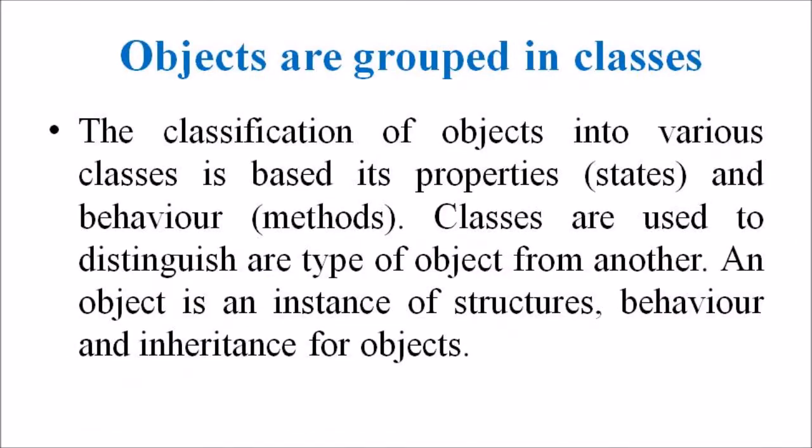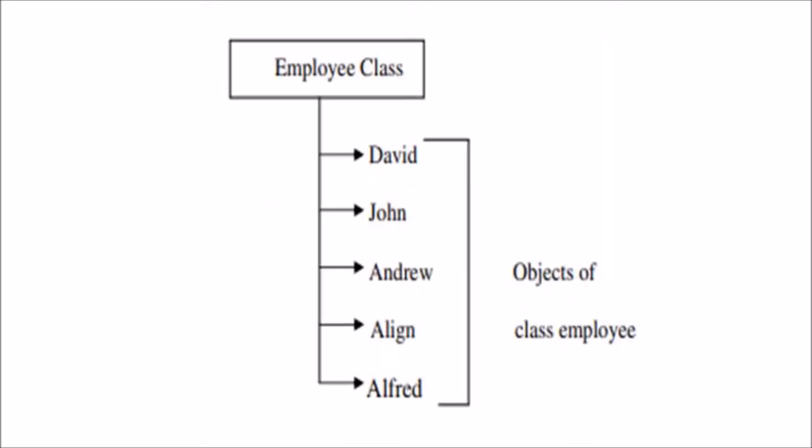An important point to keep in mind is that objects are grouped in classes. The classification of objects into various classes is based on their properties and behaviors. Classes are used to distinguish one type of object from another. An object is an instance of a class, and the chief role of classes is to define the properties, procedures, and applicability to its instances.